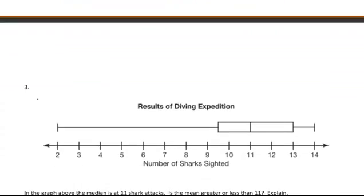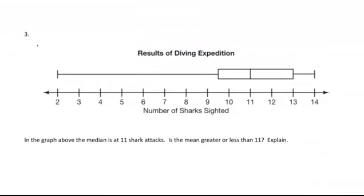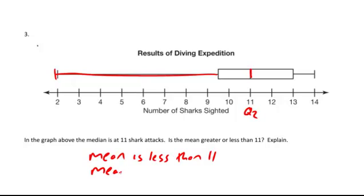Let's look at some different types. Here's a box plot. In the graph the median is at 11 shark attacks. It says is the mean greater than or less than 11. Well this graph is skewed way out to the left, so my mean is going to follow that. So my mean is going to be less than. The explanation, the mean follows the skew. This is skewed left.